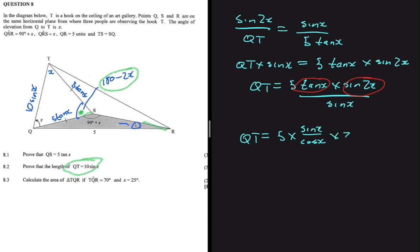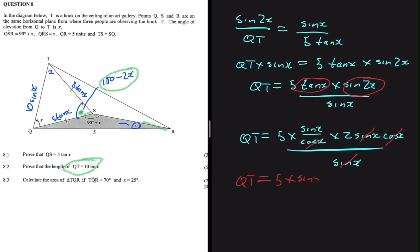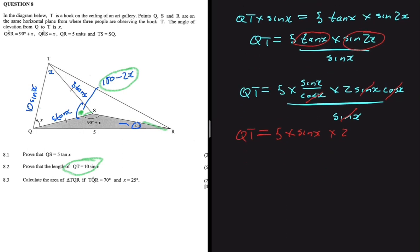Substituting: QT = 5·[sin(x)/cos(x)]·[2 sin(x) cos(x)] / sin(x). The sin(x) terms cancel and cos(x) cancels, leaving QT = 5·2·sin(x) = 10 sin(x), which is exactly what we were required to prove.